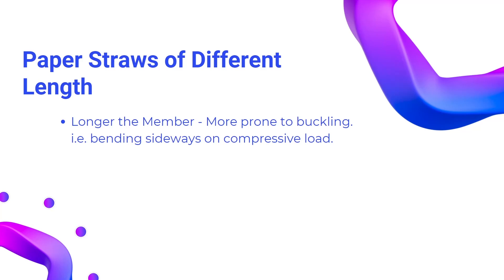Now let's move on to the second example, where we compare two paper straws of different lengths. Which one will buckle first? Obviously the 20 cm long paper straw will buckle first, because the longer one is slender and prone to wobbling in the middle. But why does this happen? As mentioned earlier, buckling is simply bending sideways. Since we have more length, we have more room for bending in the longer straw than the shorter one. On the whole, the longer the member, the more prone it is to buckling.